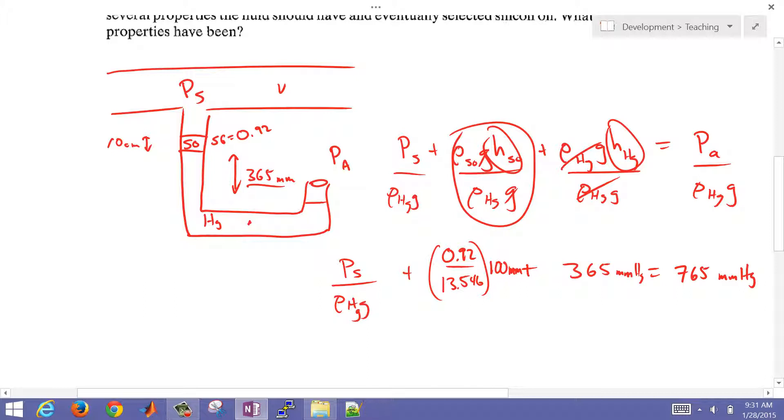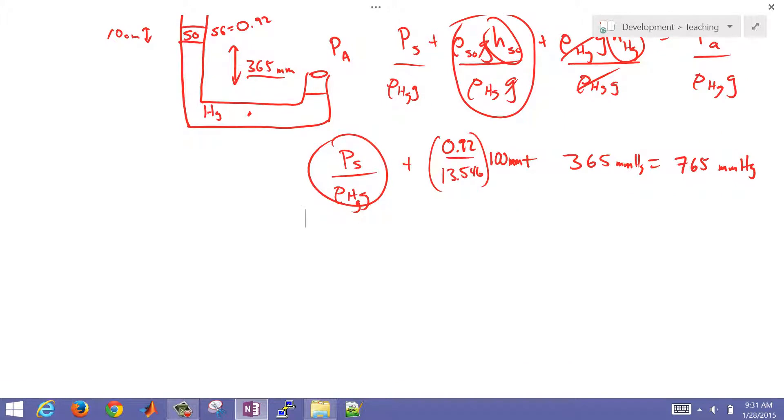I can do the calculation and get it into a head form. I'm trying to get the pressure, but if I want to get it in terms of millimeters of mercury, then P_s over rho mercury g times the gravitational constant is going to be 393 millimeters of mercury.